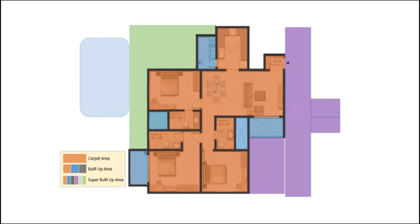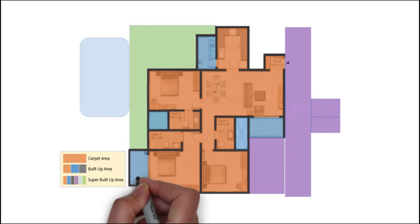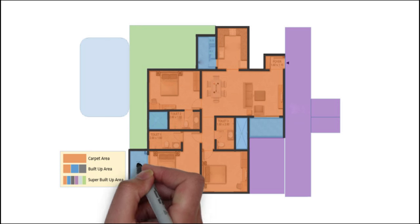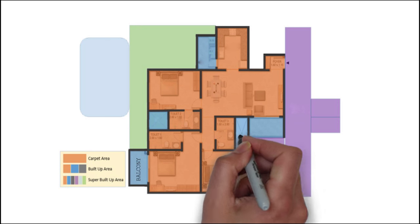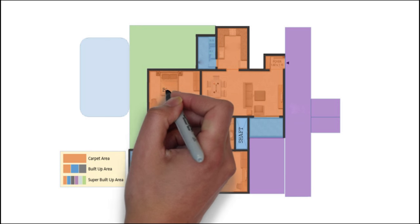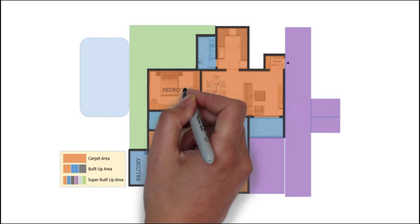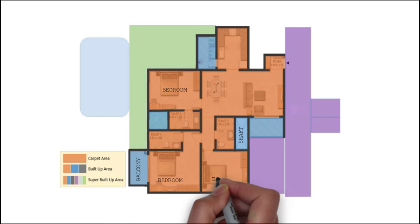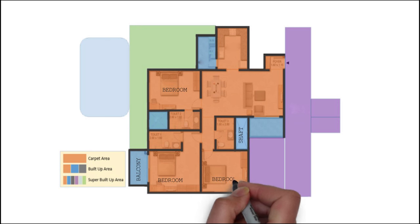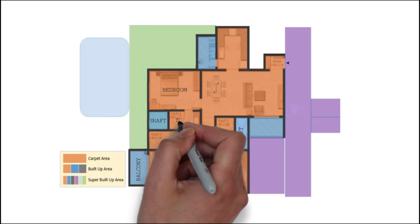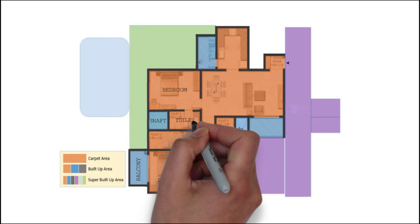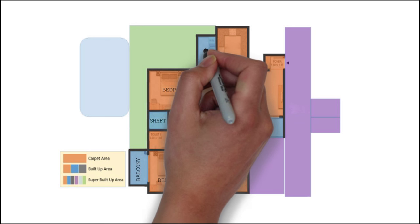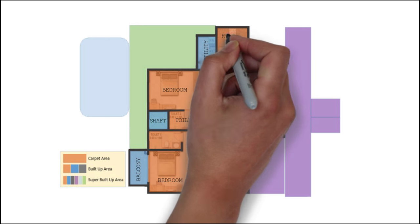A unit plan is a scale diagram that shows the arrangement of rooms in a typical one unit of a building. Each room is shown, as are all the walls, doors, windows, stairs, cabinets, appliances, plumbing fixtures, and furniture.